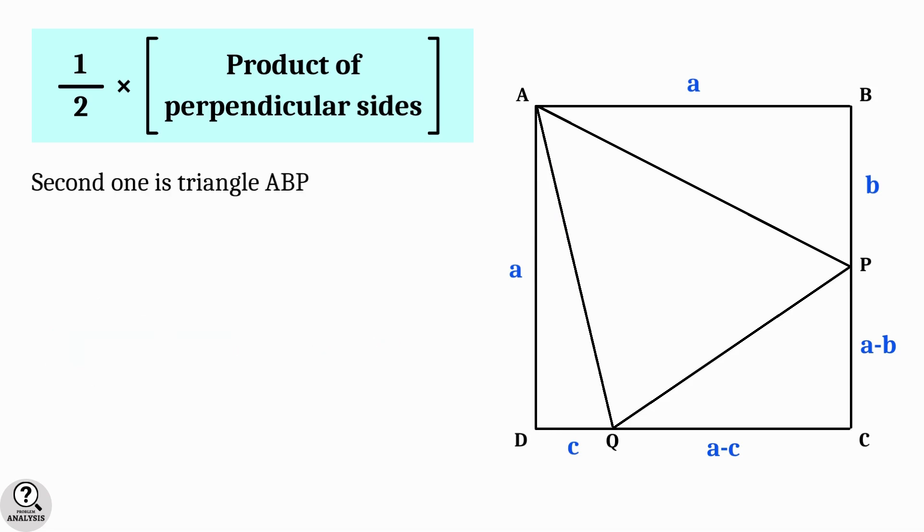Similarly, for the second triangle ABP, the perpendicular sides are a and b, which means area equal to half ab, that is equal to 9 square units. Then we get ab equal to 18. Put this as equation 2.